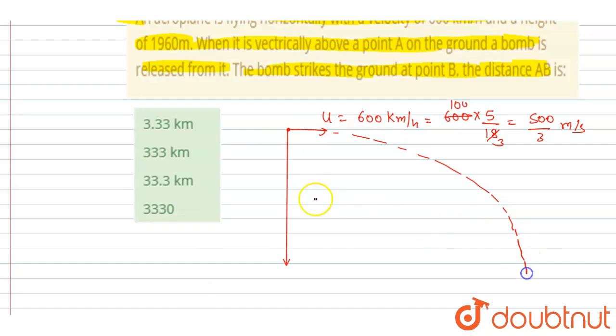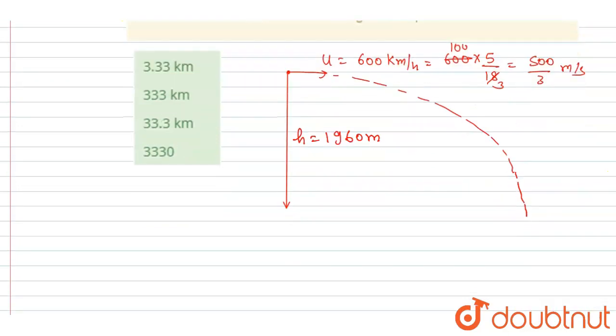If you see, this height is given as 1960 meters. So how much time will it take to travel this? I can write down the second equation of motion in vertical direction: h equals g by 2 t squared.